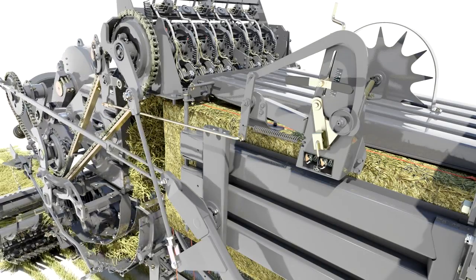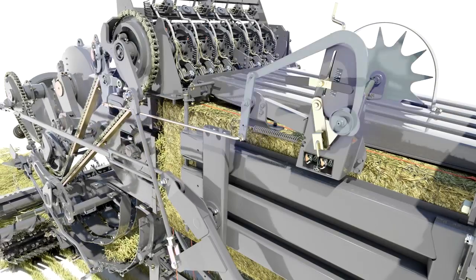When the required bale length is reached, a trip arm engages the double knotter tying system.